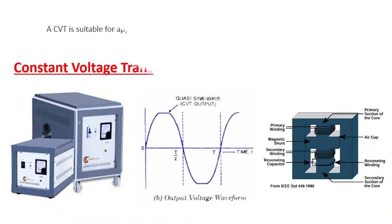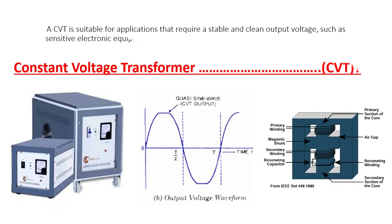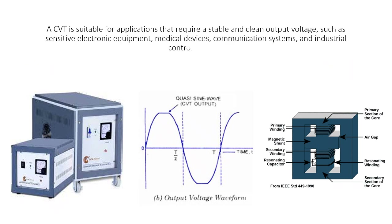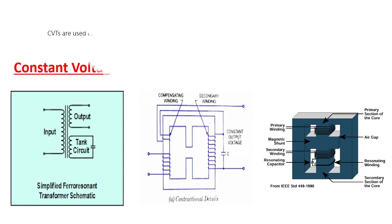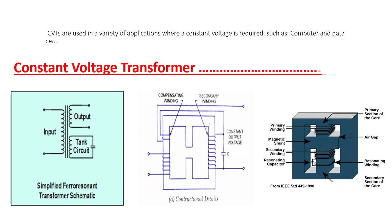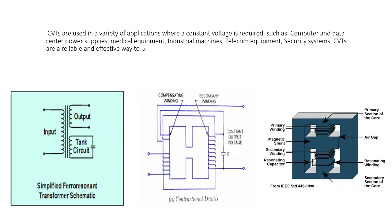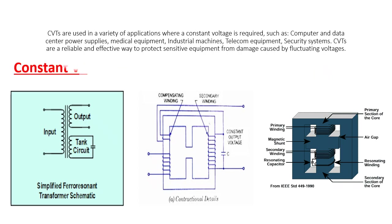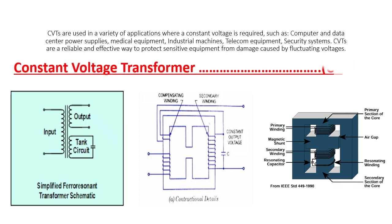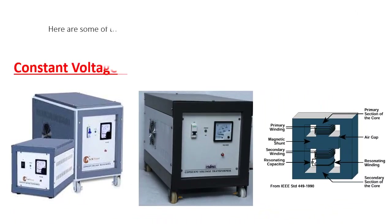A CVT is suitable for applications that require a stable and clean output voltage, such as sensitive electronic equipment, medical devices, communication systems, and industrial control systems. CVTs are used in a variety of applications where a constant voltage is required, such as computer and data center power supplies, medical equipment, industrial machines, telecom equipment, and security systems. CVTs are a reliable and effective way to protect sensitive equipment from damage caused by fluctuating voltages.